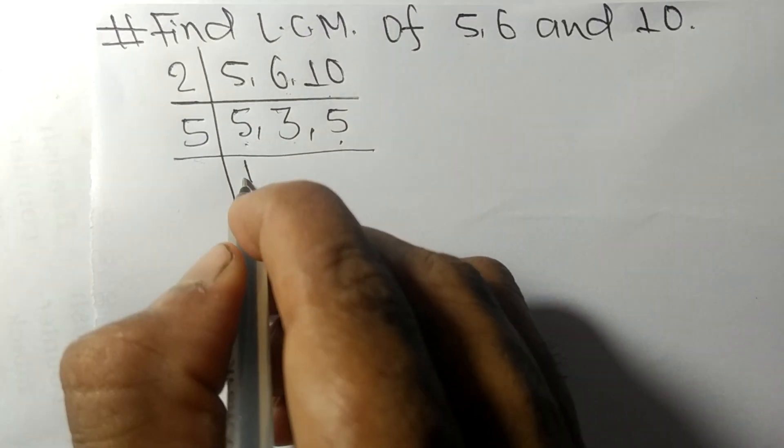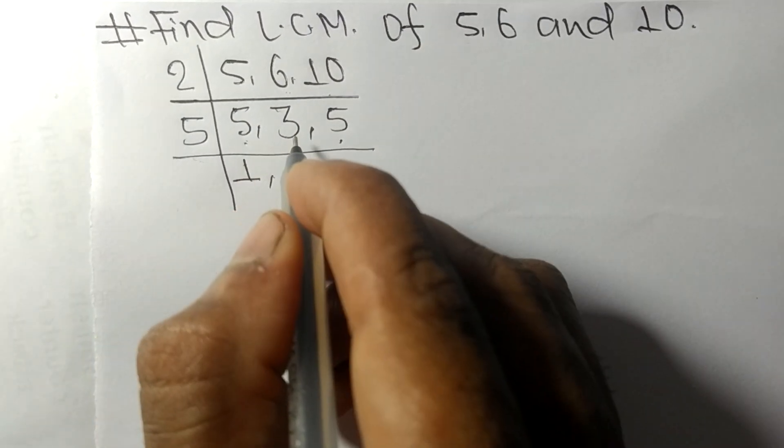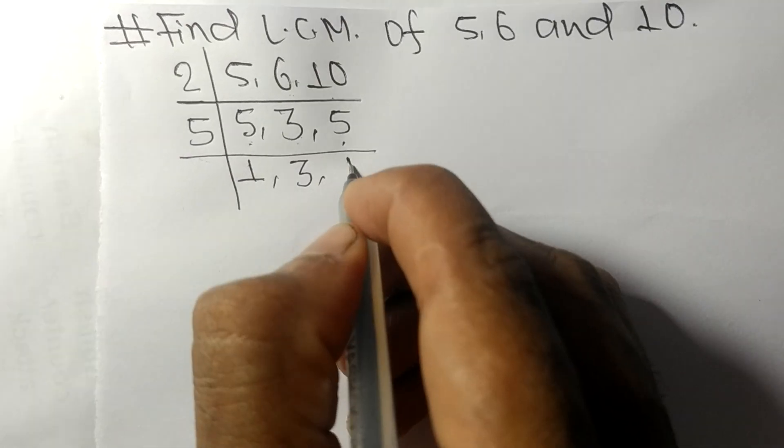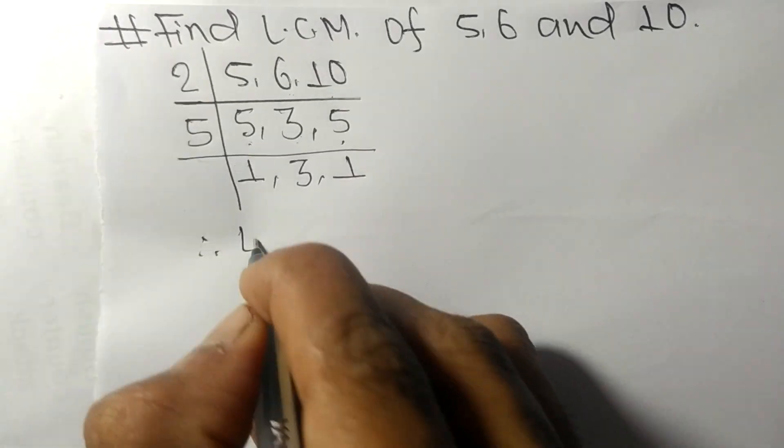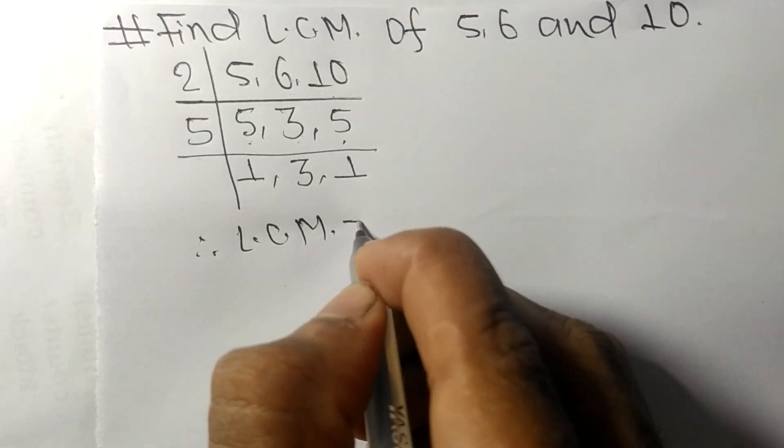So 5 times 1 mean 5, 3 not divisible so same, 5 times 1 mean 5. Therefore LCM is equal